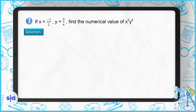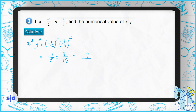Question 3: if x equals negative 1 and y equals 3/4, find the numerical value of x to the power of 3 times y to the power of 2. Substituting: (negative 1)³ times (3/4)² equals negative 1 times 9/16, wait — (negative 1)³ = negative 1/8... substituting gives (negative 1)³ × (3/4)² = negative 1/8 times 9/16 = negative 9 over 128.